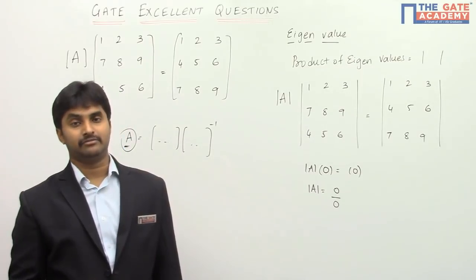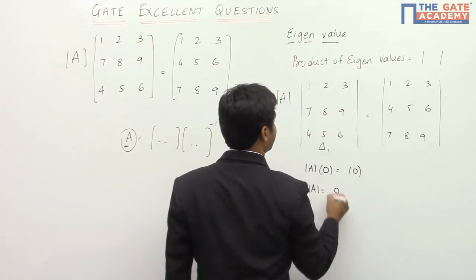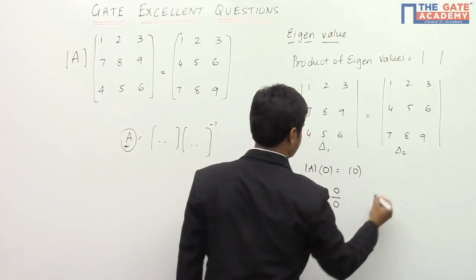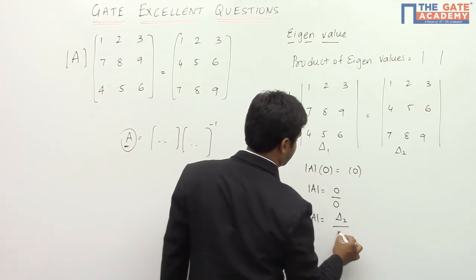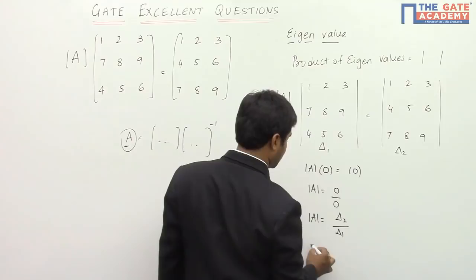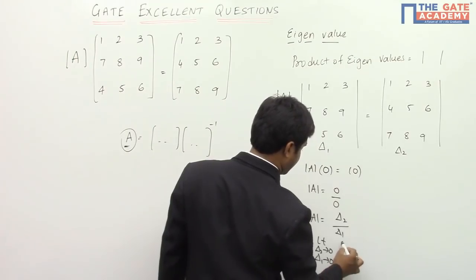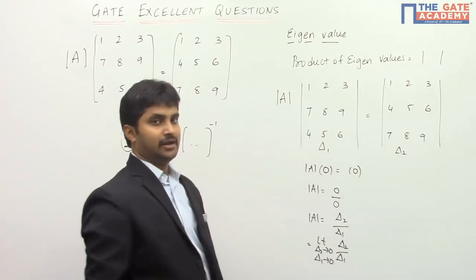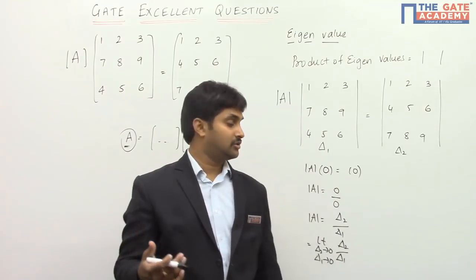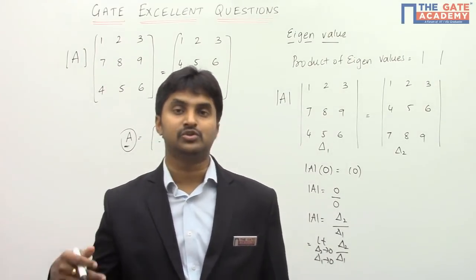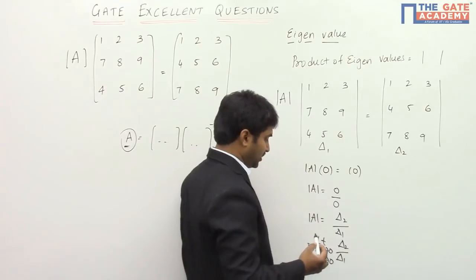When you have an indeterminate form, I will take the two determinants as Δ₁ and Δ₂. So I write determinant of A equal to Δ₂ divided by Δ₁, and use the concept of limits — limit as Δ₂ tends to zero and Δ₁ tends to zero. So here I am not only using the concept of determinants or eigenvalues, I am also using the concept of limits. This question is therefore both a tricky question and a multi-concept question.